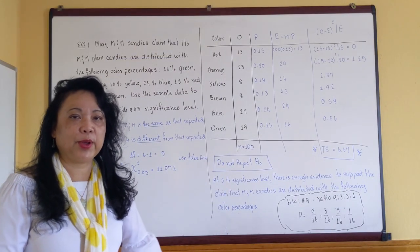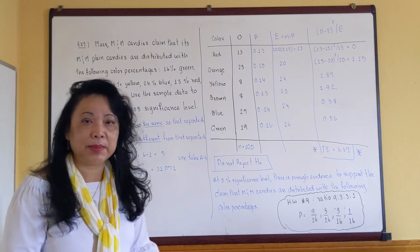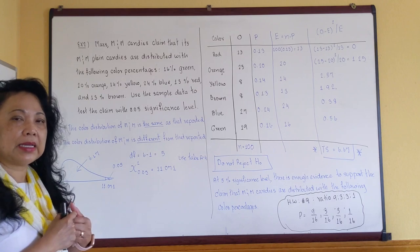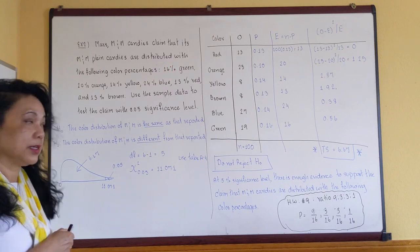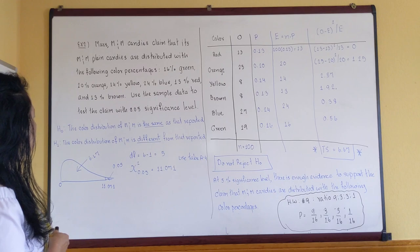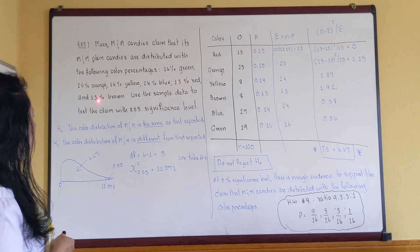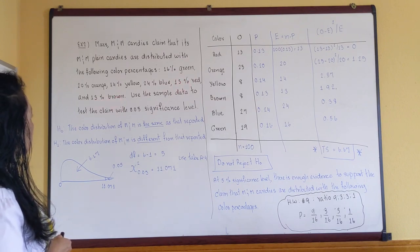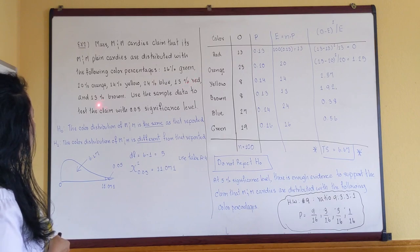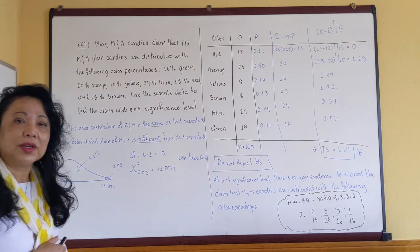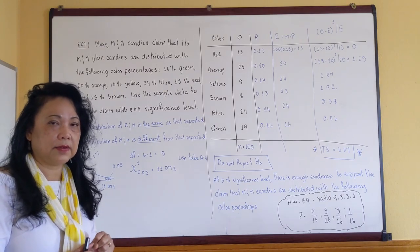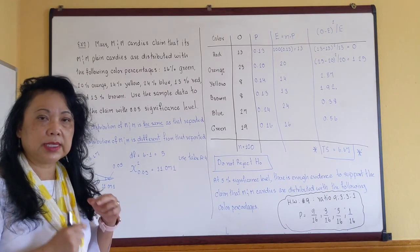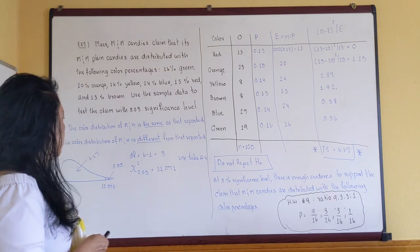Let's look at our last example for 11.1. Most of you probably know M&M candy. On the back of the M&M bag they claim a certain percent of each color: 16% green, 20% orange, 14% yellow, 24% blue, 13% red, and 13% brown. We want to test their claim. State the null and alternative hypothesis: null — the observed and expected frequencies match, meaning the color distribution is the same as reported. Alternative — the observed and expected do not match, meaning the color distribution is different from what they report.